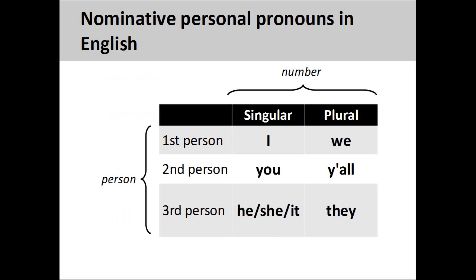The personal pronouns in English are: I, first person singular; you, second person singular; he, she, it, third person singular; we, first person plural; y'all, second person plural — a dialect form found in Southern American English — and they, third person plural.